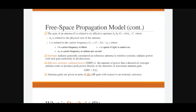Ae is related to the physical size of the antenna, and λ is the wavelength related to the carrier frequency. You can express λ = c/f, where c is the speed of light in meters per second and f is the carrier frequency in hertz. Further, c/f = 2πc/ωc, where ωc is the carrier frequency in radians per second.